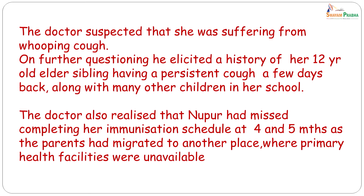Because of this, he suspected that she was suffering from whooping cough. On further questioning, he elicited a history of a 12-year-old elder sibling having a persistent cough a few days back, along with many other children who were affected in her school. He also realized that Nupur had missed completing her immunization schedule of DPT at 4 and 5 months, as the parents had migrated to another place where primary health facilities were unavailable.